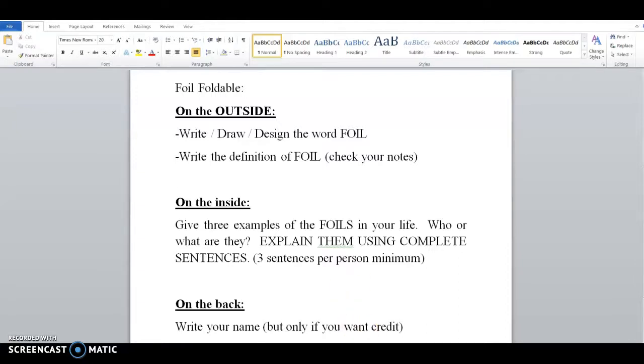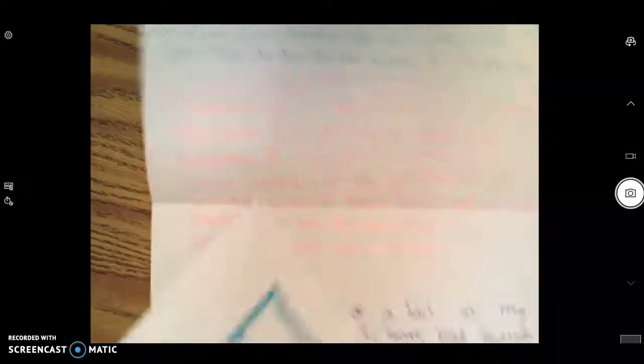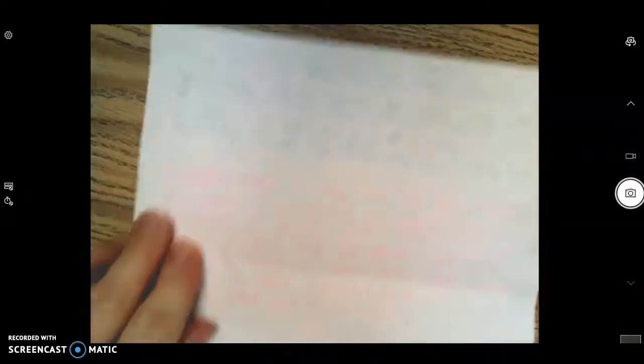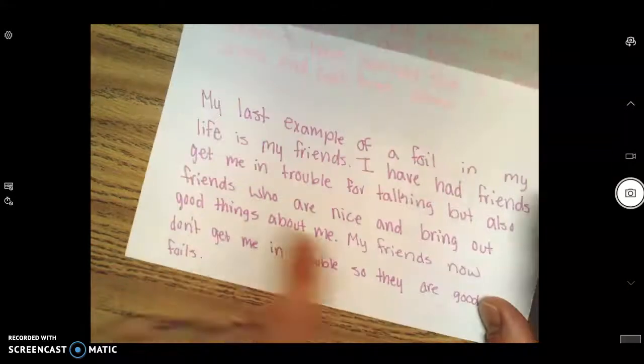Let me show you what some of these look like. Again, these are just two kids in class. They did foil, they got the word, they got the definition, and then they explained in detail their three foils. This one's about my sister, about having my phone and the way you act when you have your phone, and the last example is how you feel about their friends. She did a good job explaining in detail the foils in their life.